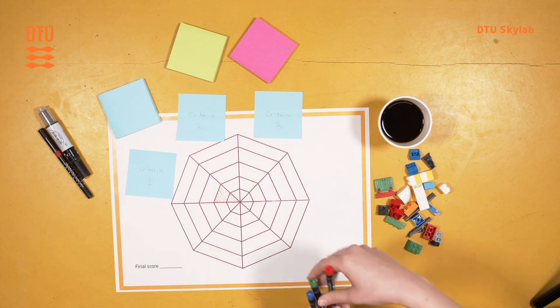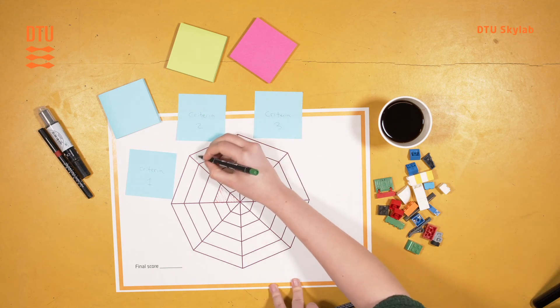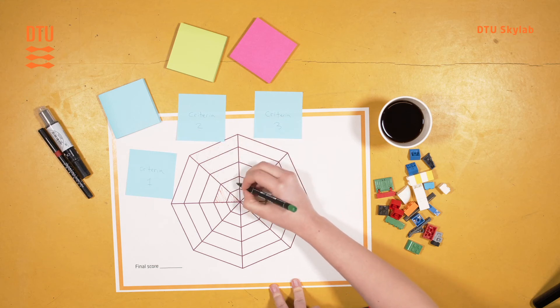And then for criteria two, maybe the concept lives very well up to the criteria. Then you can color in the entire thing.